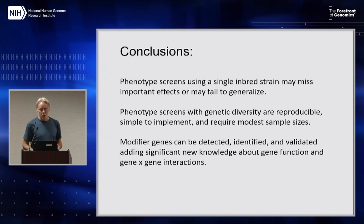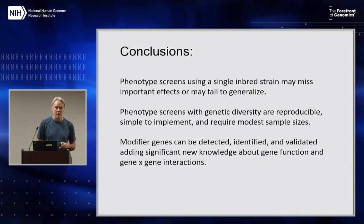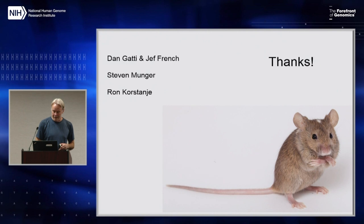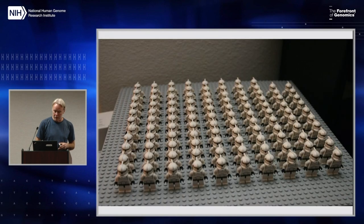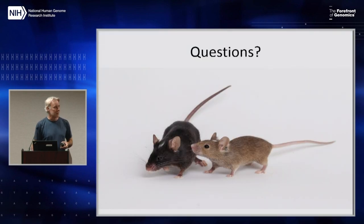And they add significant new knowledge about gene function. In fact, what they're doing for you is they're prioritizing which pairwise knockouts you should make in your all-pairwise knockouts of the mouse model — which gets us a little bit closer to being yeast geneticists. We all have a little yeast envy here. There are many people to thank, but I really want to acknowledge primarily Ron Corstania for the Alport studies, which he was really bold to undertake. And just to make a final pitch for genetic uniformity versus genetic diversity — I talked a long time, so we're going to save questions for later. Thank you.